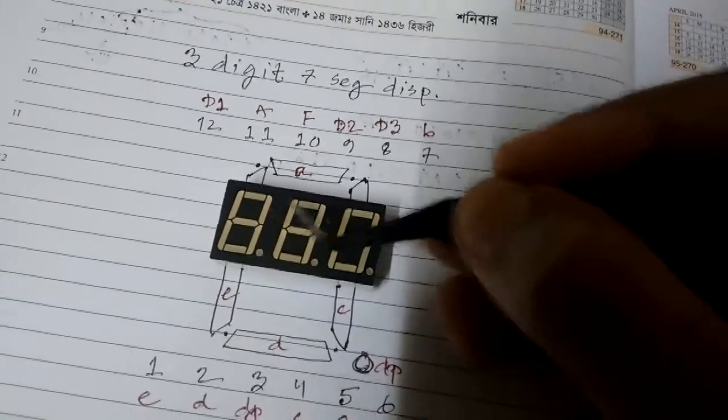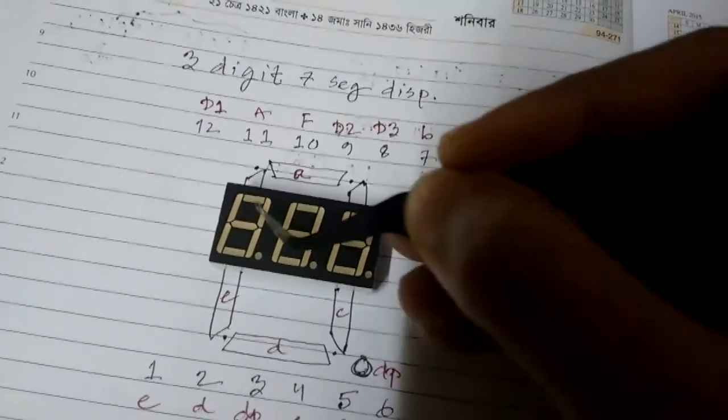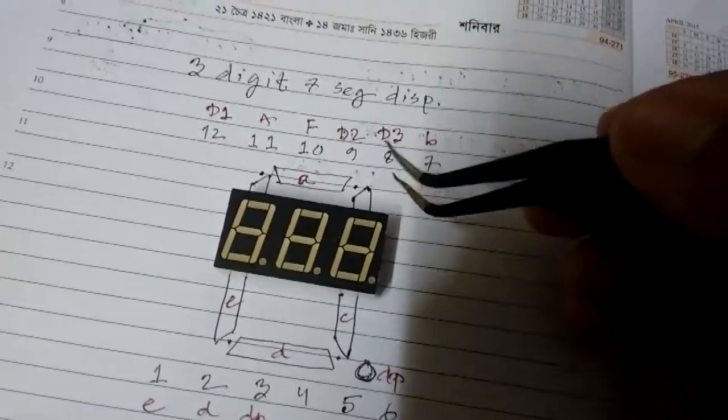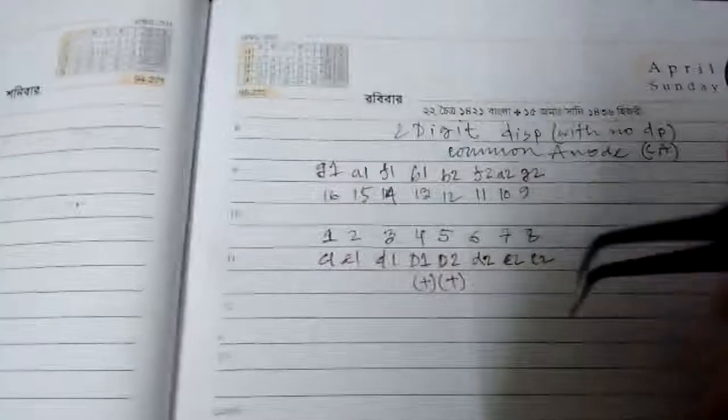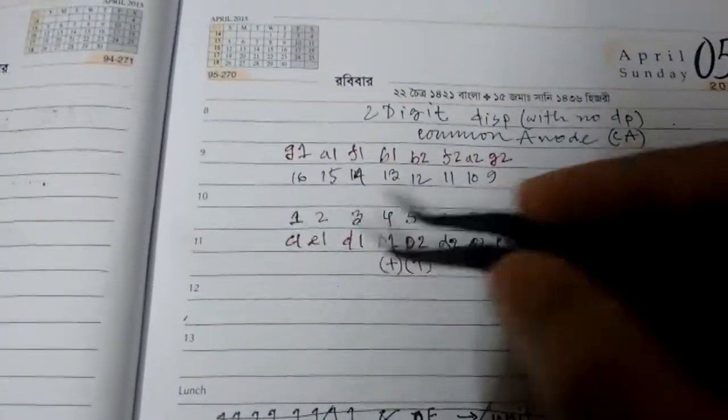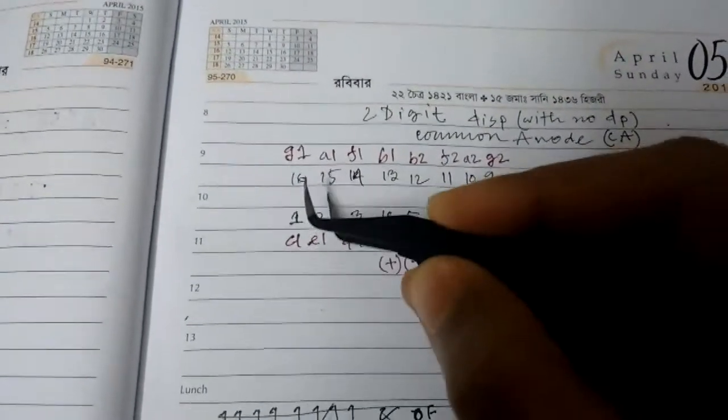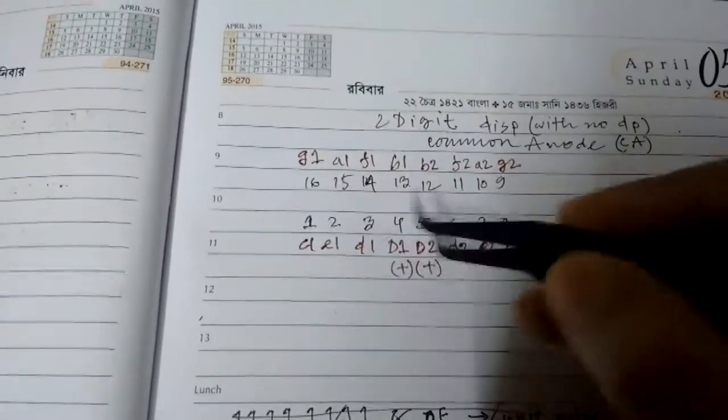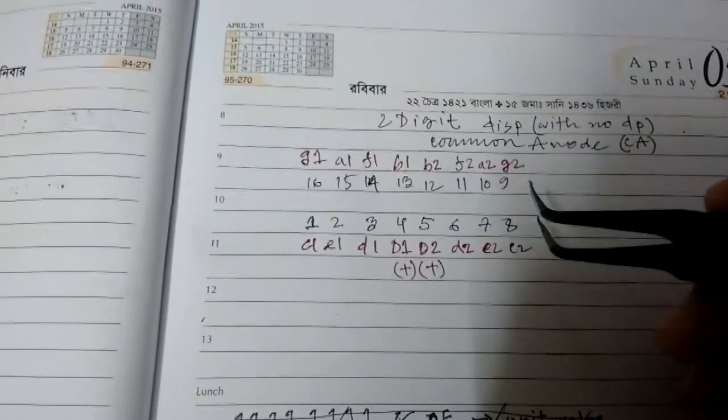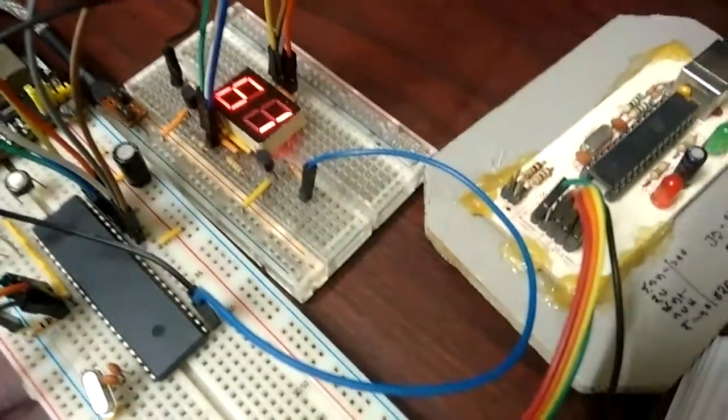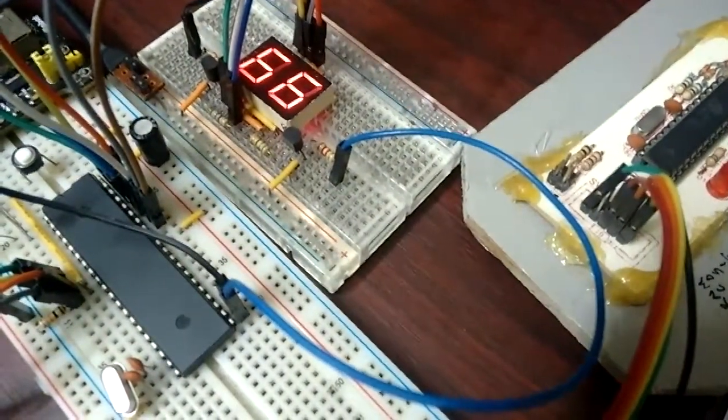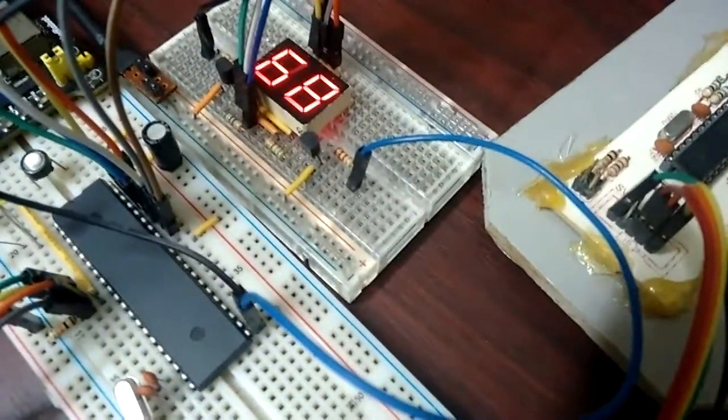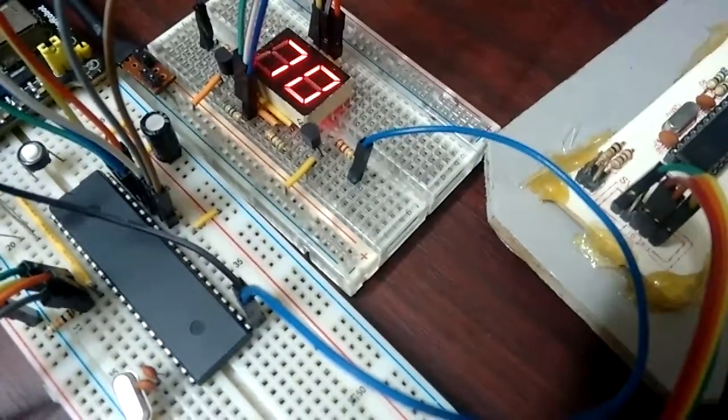And this is quite an unusual layout because this one - remember this one had all the segments internally connected, so A of this segment was also connected. The pins of these segments were common and brought out as one. But this is not the case with this one. This one has separate A, B, C, and so on.